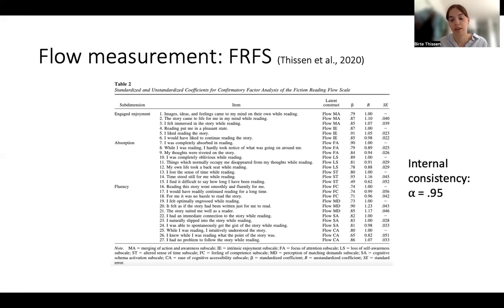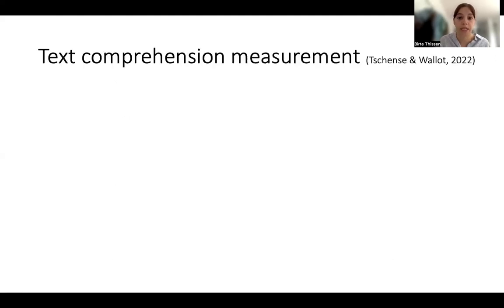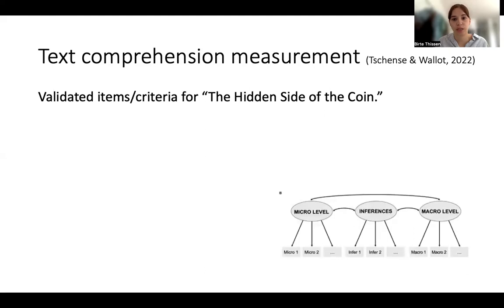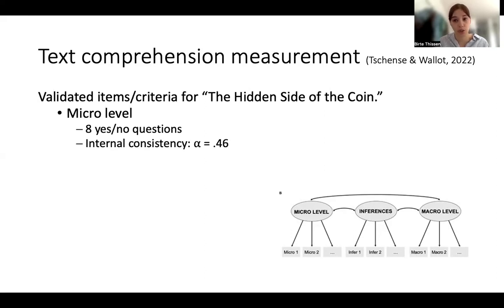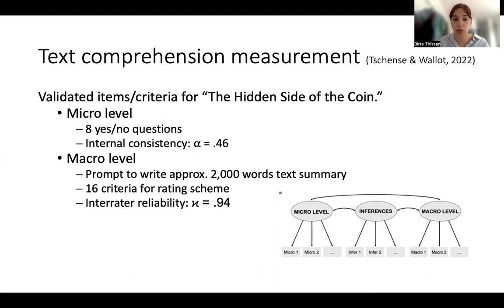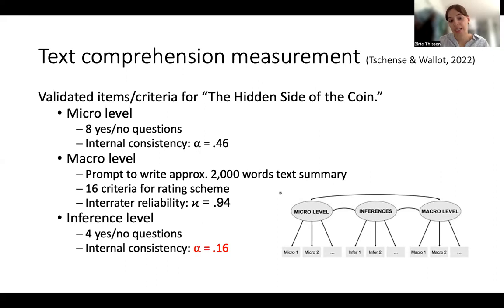For the text comprehension measurement, we had 10 validated criteria. The micro level was assessed with eight yes-or-no questions, with internal consistency of 0.46 in our sample — not spectacular, but acceptable for eight items. For the macro level, participants wrote a short text summary, rated against 16 criteria suggested by the text's developers, and we achieved a very high inter-rater reliability of 0.94. For the inference level, we had four yes-or-no questions, with internal consistency of only 0.16 — so take those results with a grain of salt.